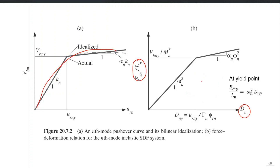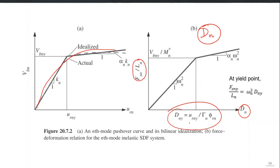That single degree of freedom system can be solved against an earthquake to calculate D_N, and then D_N can be put into this equation to get U_rN. U_rN can be used as the target displacement for that particular mode.